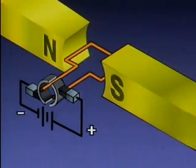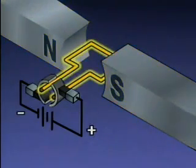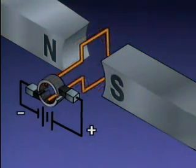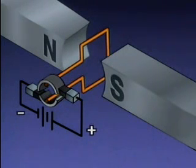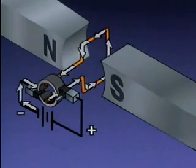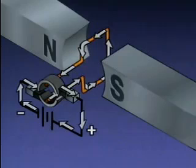The interaction between the stator's magnetic field and the armature's magnetic field causes the armature to rotate. Even though the armature has turned, the current still flows from the negative side of the power source through the armature to the positive side of the power source.